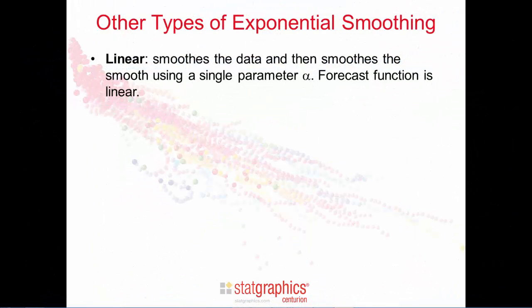There are other types of exponential smoothing that can be applied. Linear smoothing smooths the data and then smooths the smooth using a single smoothing parameter alpha. The forecast function for linear exponential smoothing is a straight line, not necessarily horizontal.